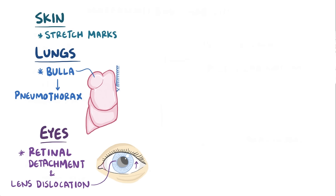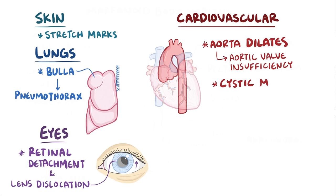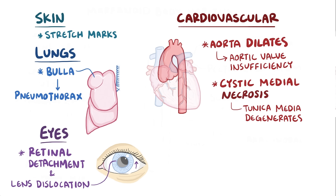The most serious features of Marfan syndrome are cardiovascular. The aorta dilates over time, which is a risk factor for aortic valve insufficiency, where blood leaks back into the left ventricle during diastole. The aorta also undergoes cystic medial necrosis, which is where there's degeneration of the tunica media, the central portion of the aortic wall. Both dilation and cystic medial necrosis weaken the aorta, making it susceptible to aneurysm, dissection, and rupture.